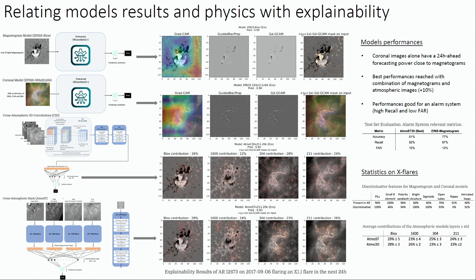And on the corona, it uses bright structures, sigmoids, ropes, intricated loops. And so that's good to see that the model learns things and that we can maybe learn from them. So these first statistics are made by observation, and I'm working on tools to make them more systematic and generalize them on every class of flares.